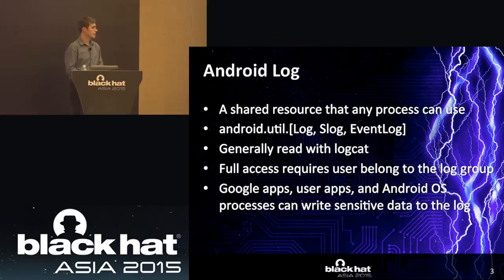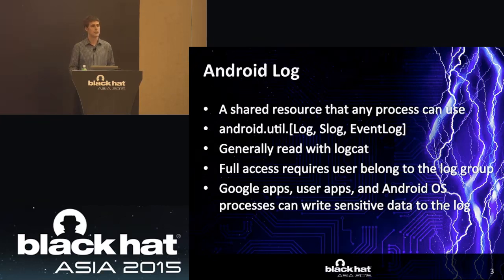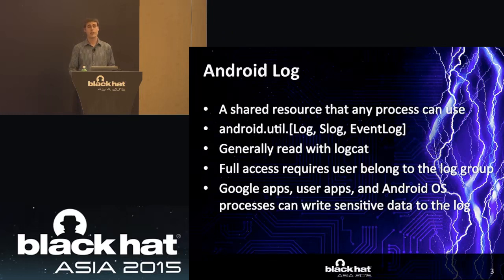The Android log is mostly used for debugging. When you reach certain states or an unexpected event occurs in your application, you would generally want to write something to the log. Crash dumps also go to the log so a developer can get feedback and improve the program. Any process on the Android OS can write to the Android log using the standard Android API: android.util.log for the main log, slog for the system log, an event log for the event log, and certain log tags will go into the radio log.